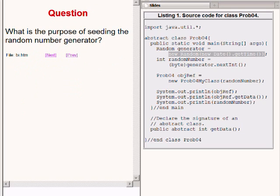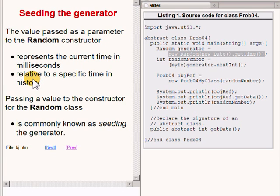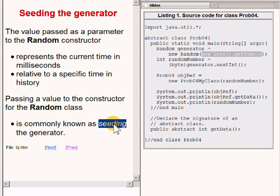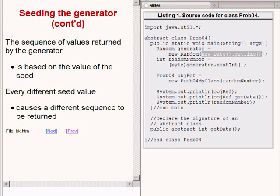Here's a question: what is the purpose of, or what is meant by, seeding the random number generator? The value passed as a parameter to the Random constructor represents the current time in milliseconds relative to a specific time in history. Passing a value to the constructor for the Random class is commonly known as seeding the generator. The sequence of values returned by the random number generator is based on the value of the seed. Every different seed value causes a different sequence of random number values to be returned.